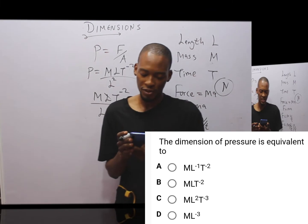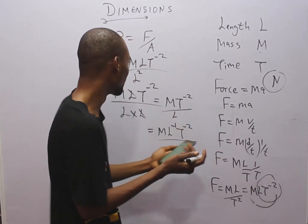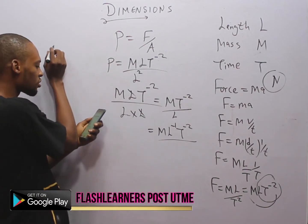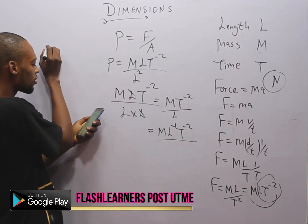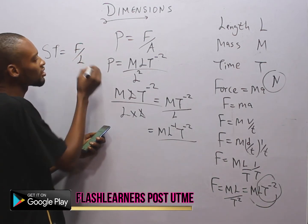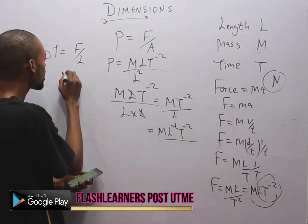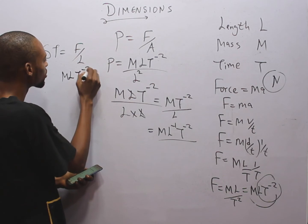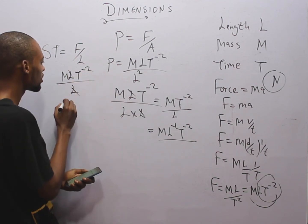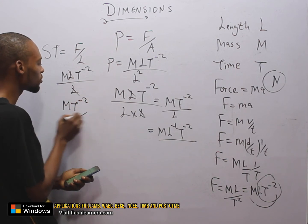The next question asks for the dimension of surface tension. Surface tension is simply force per unit length. We already have force as M·L·T⁻². Dividing by L, one L cancels with the L in the numerator, leaving M·T⁻². So the dimension of surface tension is M·T⁻². Once you know the definition of a quantity, you can derive its dimension.